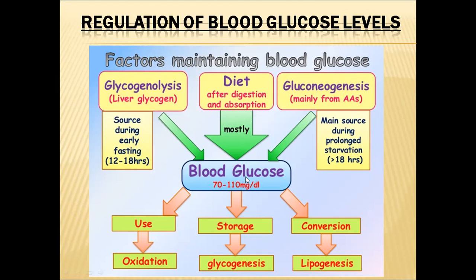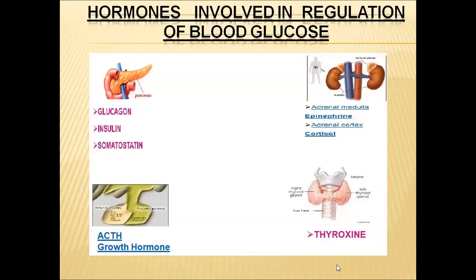Three factors help decrease blood glucose levels. First is oxidation or cellular respiration, which includes glycolysis, Krebs cycle, electron transport, and oxidative phosphorylation. Second is the glycogenesis process. Third is the lipogenesis process.